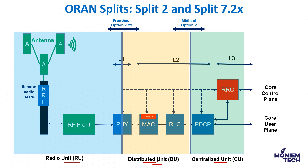A key concept of Open RAN is opening the protocols and interfaces between these various building blocks — separating hardware and software in the RAN. The O-RAN Alliance has defined different interfaces within the RAN, including the fronthaul interface between RU and DU, and the midhaul interface — option 2 — between CU and DU. This is the main concept of RAN disaggregation.